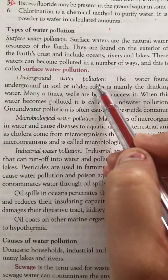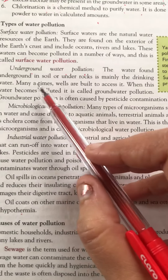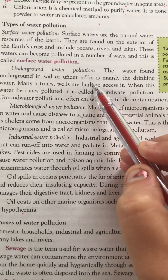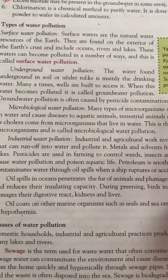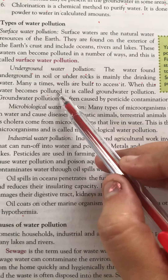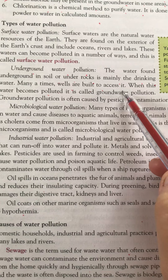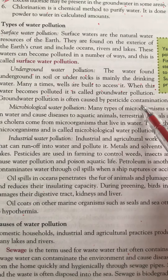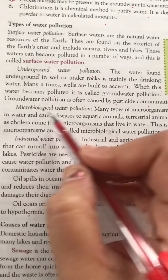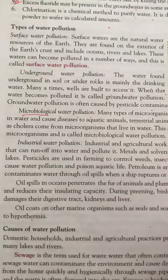The second type is underground water pollution. Underground water is found in soil and under rocks and is mainly used for drinking. When a well is contaminated, this is called underground water pollution.